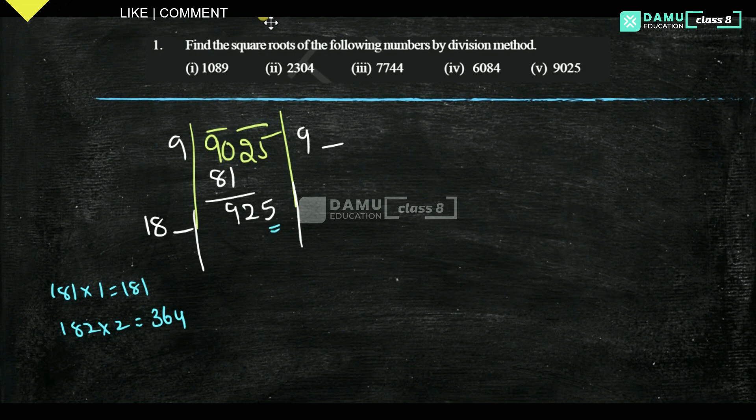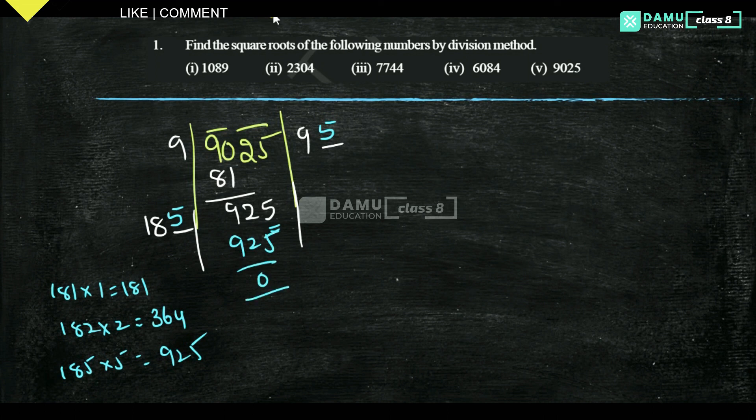So you can take 5. 5 times 5 is 25, maybe 185 into 5. What you will get, we're going to check. 185 into 5 will be 925. Here 5, here 5. So 925, then you will get remainder as 0. The quotient here is 95. That means square root of 9025 equals 95.